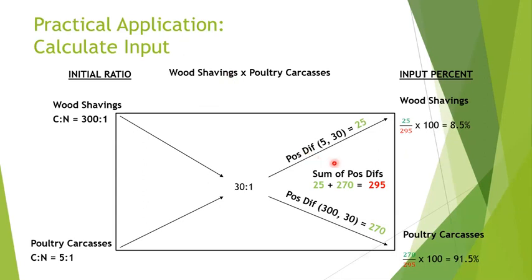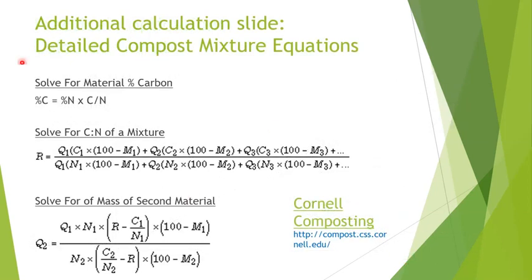Here's a simplified version of the math for calculating your C:N ratios to create that optimal composting ecosystem. Typically you're looking at a two or three input system, and your inputs need to be calculated based on what your primary input might be. For example, a poultry carcass for mortality composting has a C:N ratio of 5:1, and wood shavings would need to counterbalance this at 300:1. We're not going to go into the math today because there's a nice Excel tool that does all the math for you.